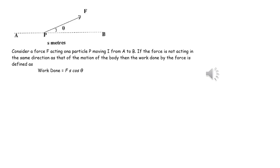If the force is not in the direction of motion, we find the component of the force that is in the direction of motion. The formula work done equals magnitude of force times distance travelled in the direction of the force now becomes work done equals F cosθ multiplied by s.